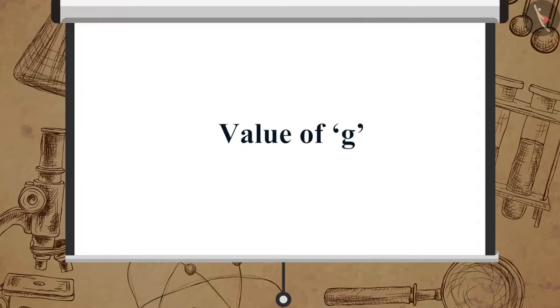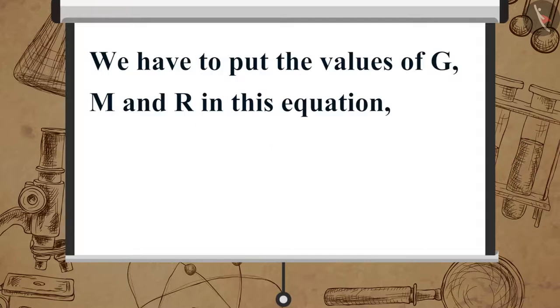Now, let's see how we can calculate the value of g. To find out the value of g, we have to put the values of G, M and R in this equation: g equals G multiplied by M upon R square.